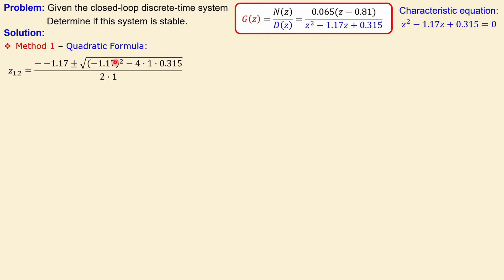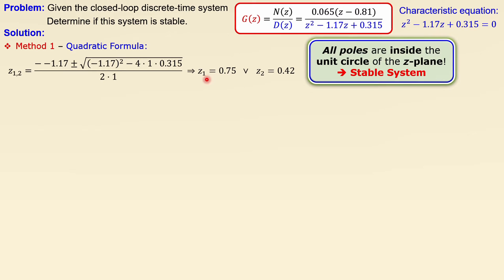The constant here is 0.315. You take the square root of that, divide by two times the coefficient of z-squared. Working it out gives z1 = 0.75 and z2 = 0.42. Both poles have absolute value less than one, meaning both poles are inside the unit circle of the z-plane. Therefore, this system is stable.